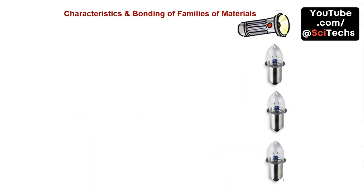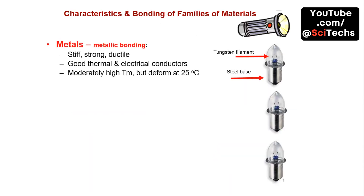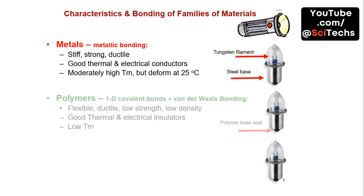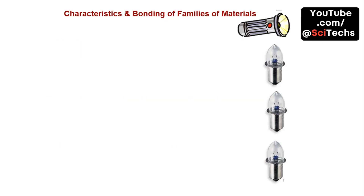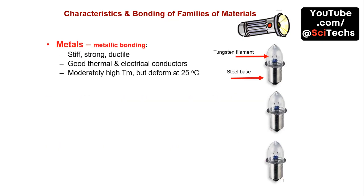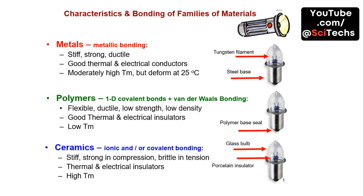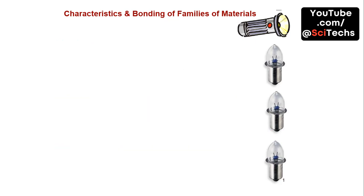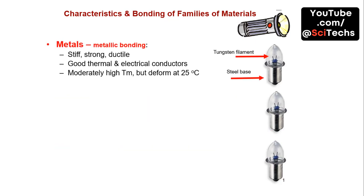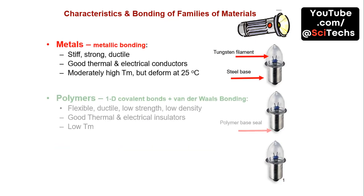Different materials exhibit unique characteristics based on their bonding. Metals are strong and ductile, polymers are flexible and low strength, and ceramics are stiff and brittle. These properties influence their applications.